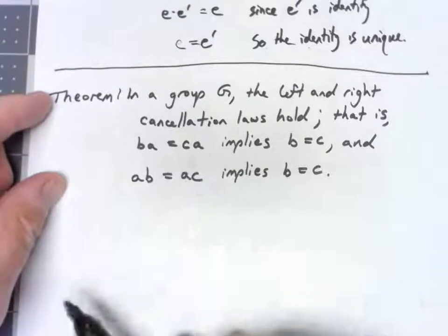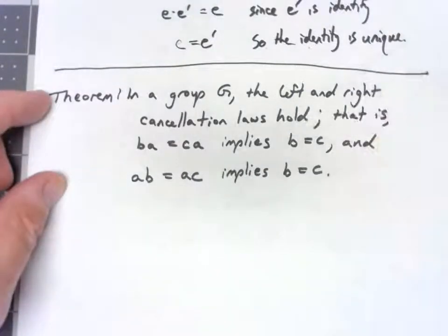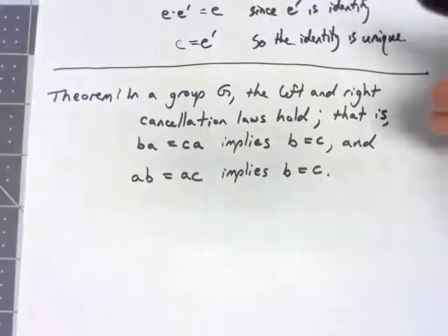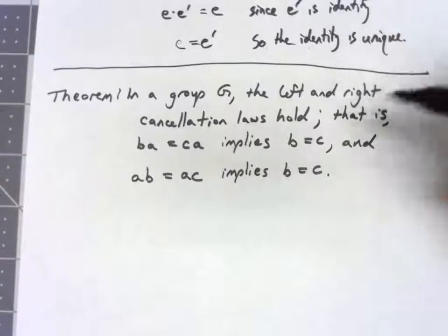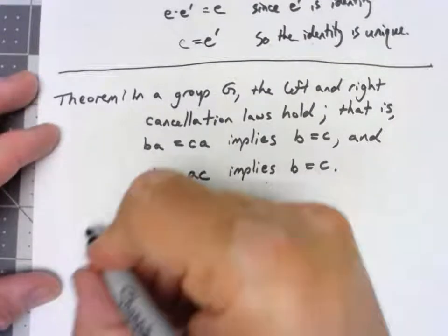If BA is equal to CA, we can cancel out those A's and say that B is equal to C. Similarly, if AB equals AC, if we have the same thing multiplied on the left, we can cancel those out and be left with B equals C. So let's start with the right cancellation.